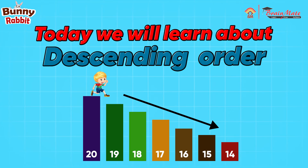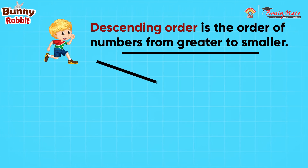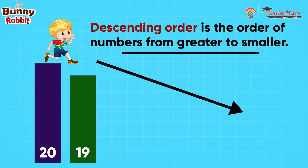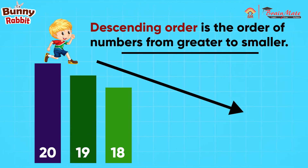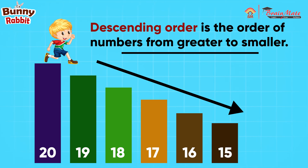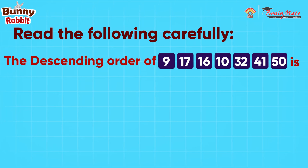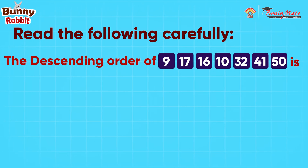Today we will learn about descending order. Descending order is the order of numbers from greater to smaller, like 20, 19, 18, 17, 16, 15, 14. Read the following carefully. First example: the descending order of 9, 17, 16, 10...